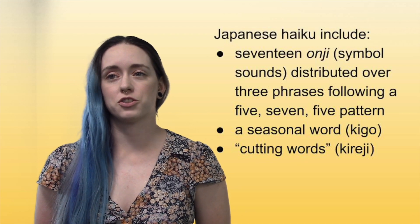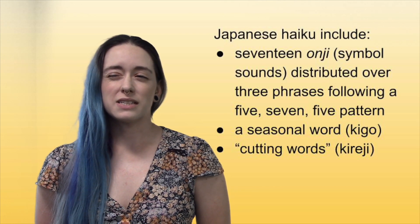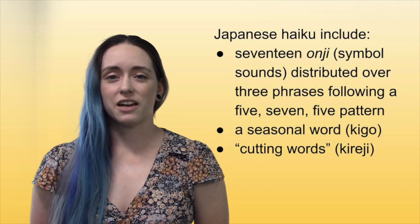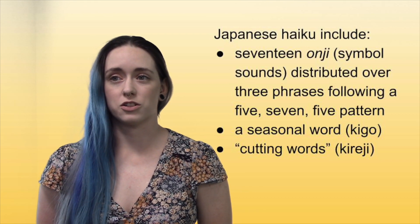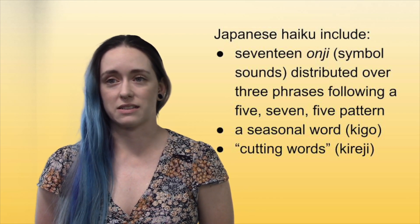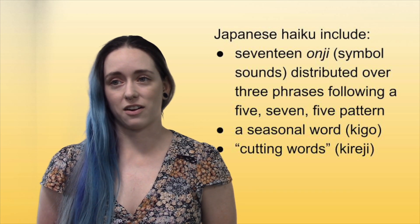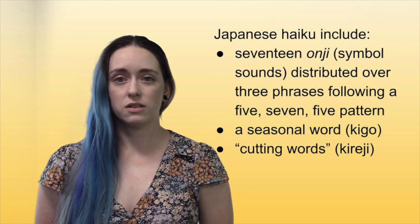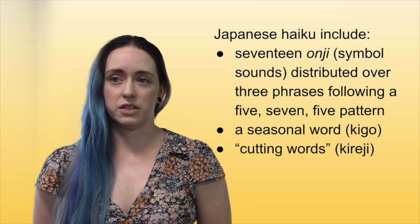Haiku is a traditional Japanese poetic form which has been adapted for use in other languages. A Japanese haiku typically has 17 onji, which are symbol sounds, distributed over three phrases following a 5-7-5 pattern. And in Japanese, haiku should include a seasonal word, kigo, and cutting words, kireji.